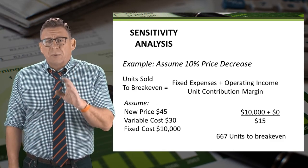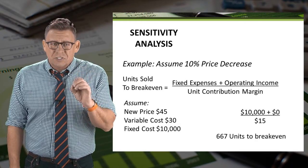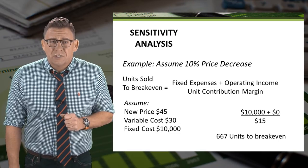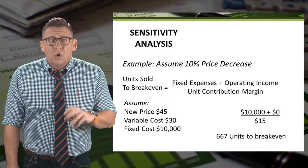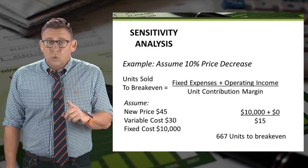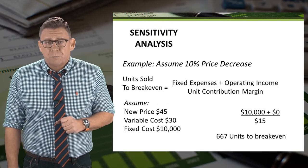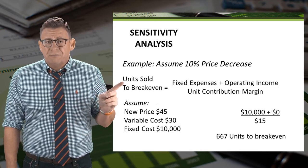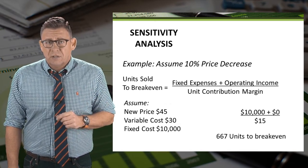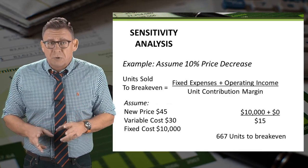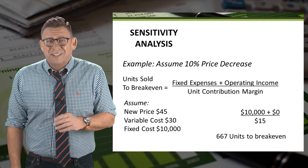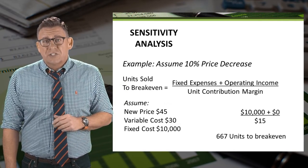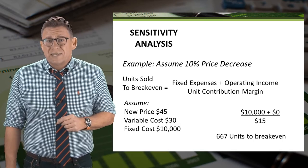But what if management is considering a 10% price decrease based on pricing pressures from competitors? What is breakeven now? We need to calculate the new unit contribution margin. In this case, a 10% decrease in price drops the price from $50 per unit to $45 per unit. So the unit contribution margin drops from $20 to $15. Thus, the breakeven in units increases to 667 units with a price decrease.